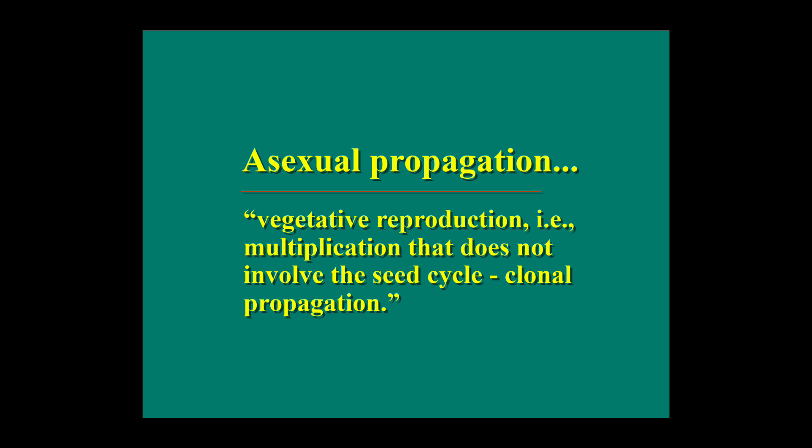Asexual propagation is vegetative reproduction — multiplication that does not involve the seed cycle. Multiplication that does not involve the seed cycle is called clonal propagation. There is no alternation of generations, and the reverse haploid and diploid phase that occurs in the seed cycle does not take place.